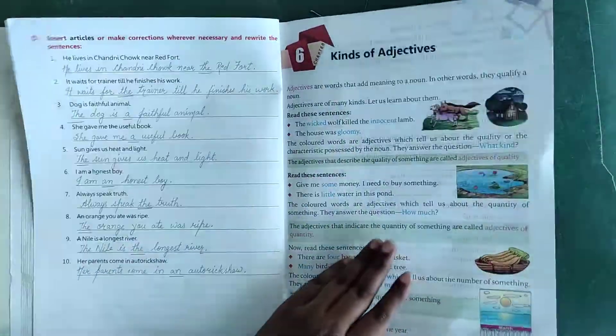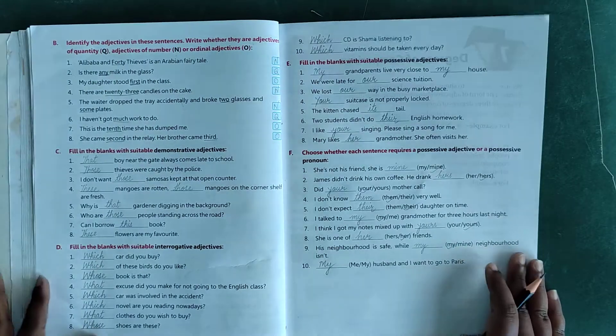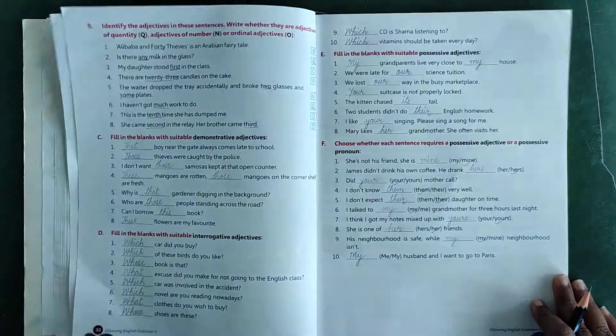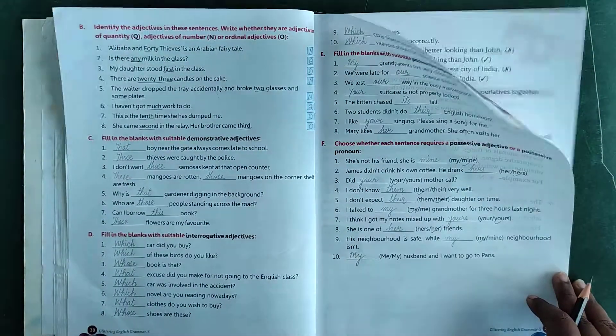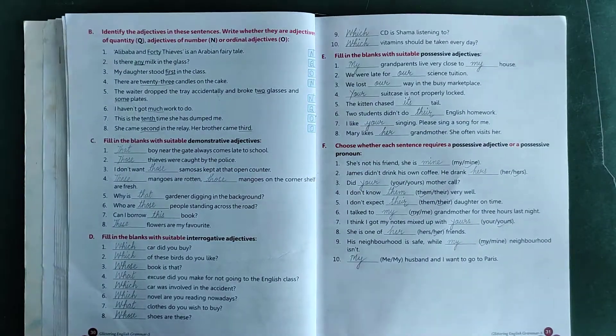Number 9: his neighborhood is safe while dash neighborhood isn't - my neighborhood. Number 10: dash husband and I want to go to Paris - my husband and I. In this way your chapter is complete, chapter number 6, kinds of adjectives. You all complete your work and learn the chapter as well.